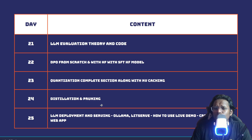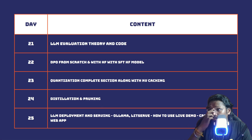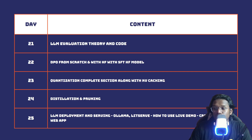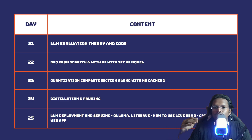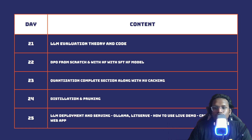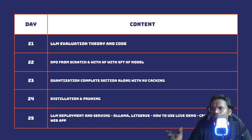In day twenty-four we'll cover distillation and pruning. LLMs are always very large, and that size isn't always usable in production environments. What the industry typically does is prune the model first, then distill and retrain it, arriving at a smaller model that performs close to the larger one. We'll cover the theory and code behind both techniques.